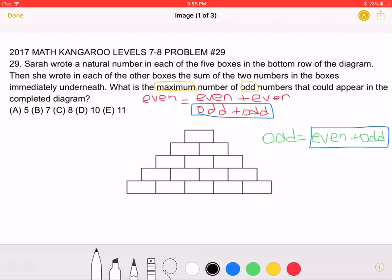Sarah wrote a natural number in each of the five boxes in the bottom row of the diagram. Then she wrote in each of the other boxes the sum of the two numbers in the boxes immediately underneath.